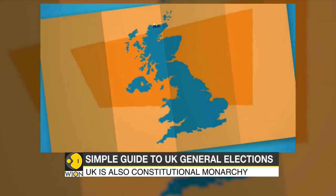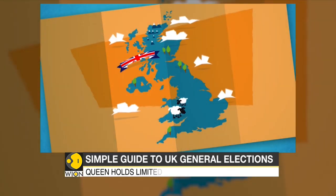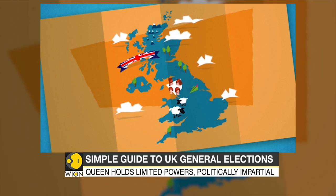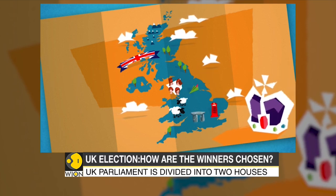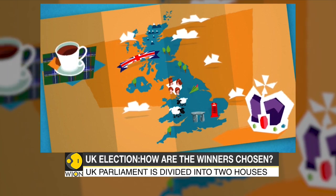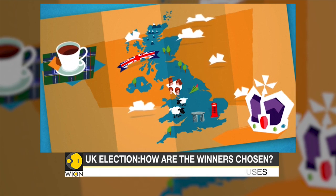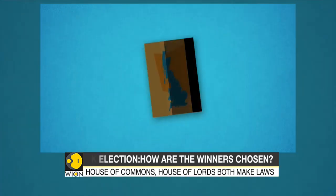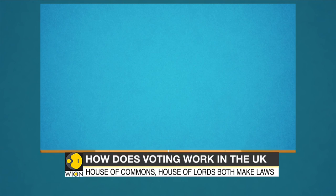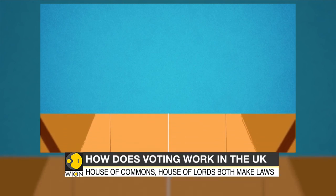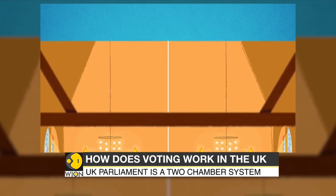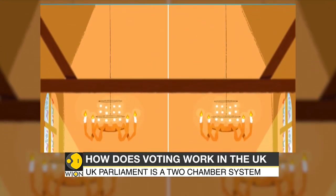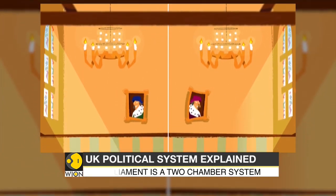The United Kingdom is a parliamentary democracy and constitutional monarchy. Queen Elizabeth II is head of state. She has limited powers and is politically impartial. Parliament is divided into two houses — the House of Commons and the House of Lords. Both make laws, scrutinise government, and debate current issues.